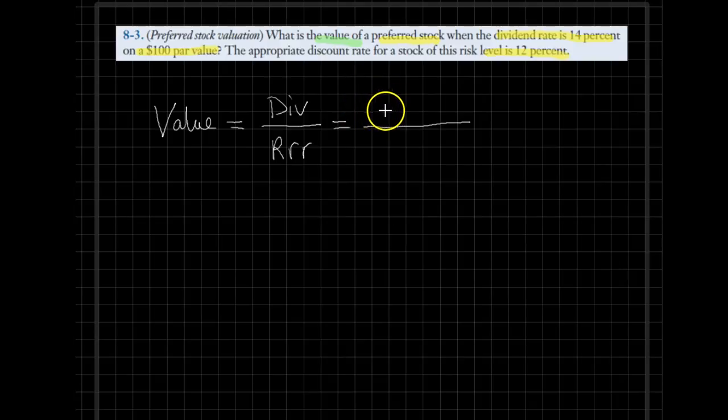For this particular example, the dividend amount would be 14% of the par value, so it would be 0.14 times a par value of $100, all divided by a 12% required rate of return. The rest of the problem would be just to calculate that number.